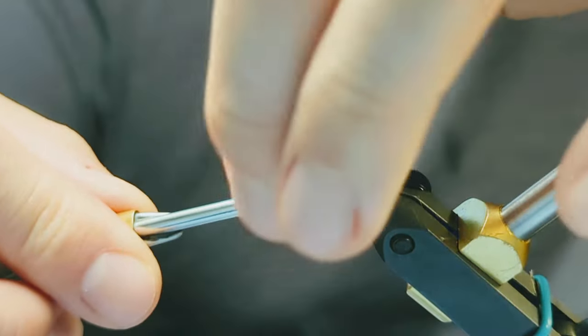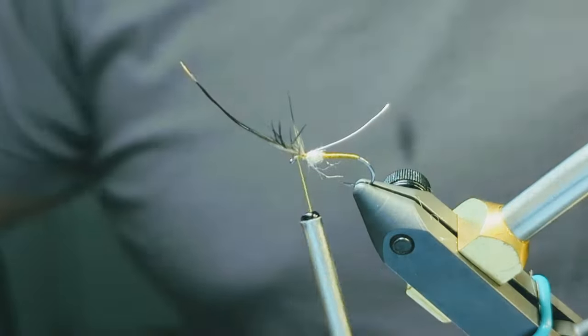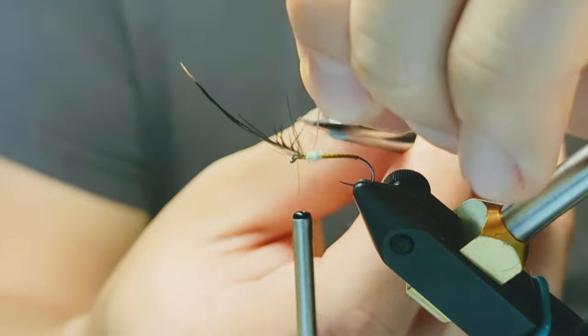Take a few thread wraps around the stem of the feather and anchor it into place. Then preen the feather backward and take a few wraps in front and cut the excess stem.